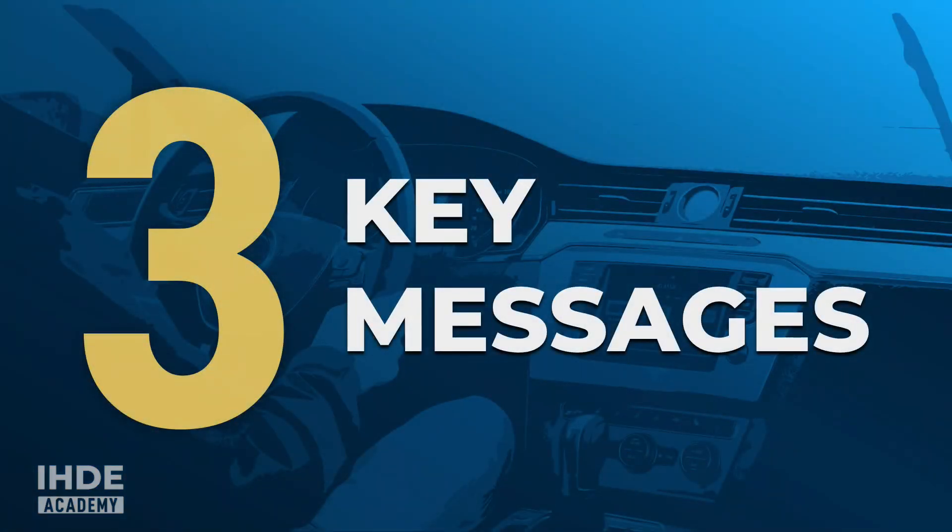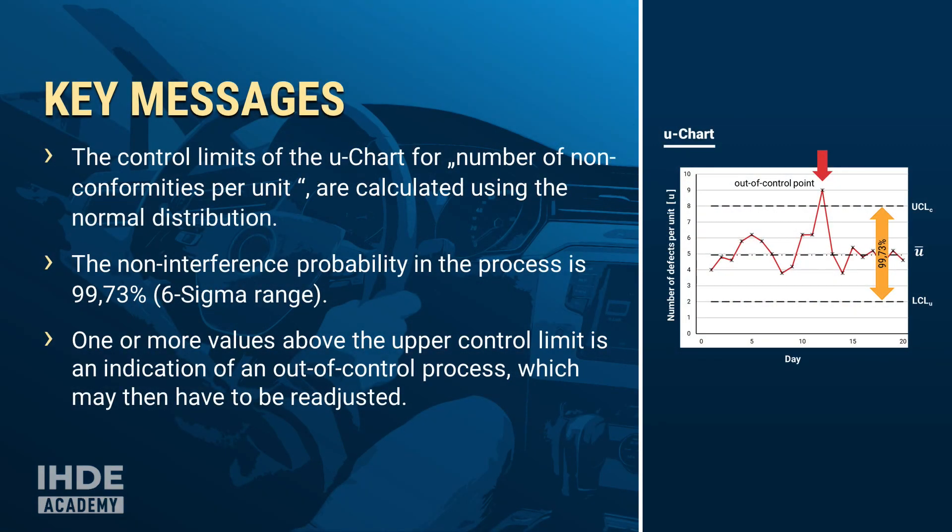Well, that was a lot of new information. Therefore, I would like to conclude by repeating the three most important key messages. The control limits of the u-chart for number of non-conformities per unit are calculated using the normal distribution. The non-interference probability in the process is 99.73%. This is equal to the six sigma range. One or more values above the upper control limit is an indication of an out-of-control process, which may then have to be readjusted.